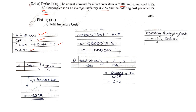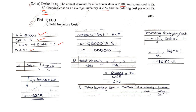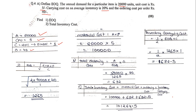Number three, inventory carrying cost = half into EOQ into C = half into 1265 into 1 = 632.5 rupees. Once we have all three values, applying the final formula: total inventory cost = material cost + ordering cost + inventory carrying cost = 1,00,000 + 632 + 632.5 = rupees 1,01,264.5.